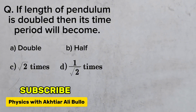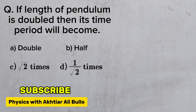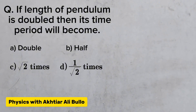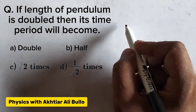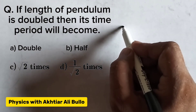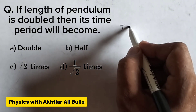The question says: if the length of a pendulum is doubled, then its time period will become — (a) double, (b) half, (c) under root two times, (d) one upon under root two times. The time period of a simple pendulum is calculated by using the formula...